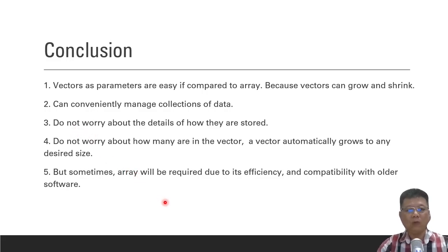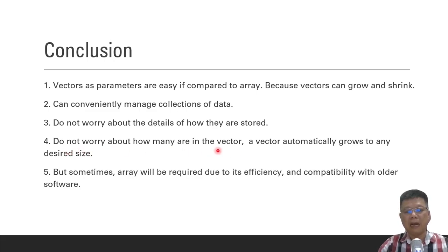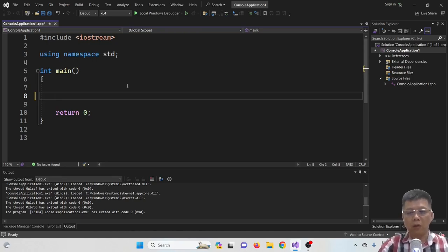As a conclusion, a vector as a parameter is much easier to use compared to an array — easier to call, remove data, and arrange data — because vectors can grow and shrink. We don't have to care about the size because the compiler knows it using the .size() function. It is easy to manage a collection of data without worrying about how many items are in the vector. In some cases, however, arrays will still be required because of compatibility and efficiency.